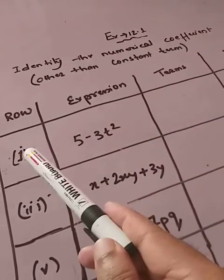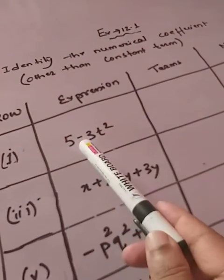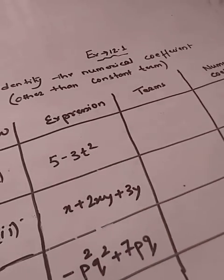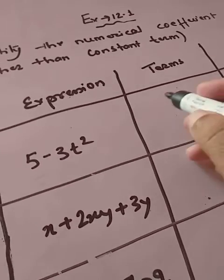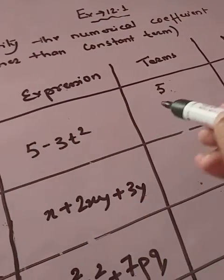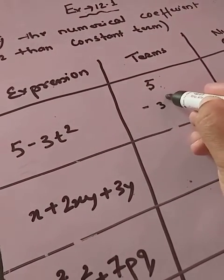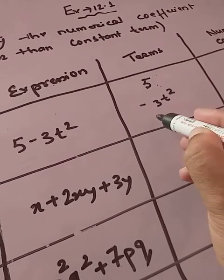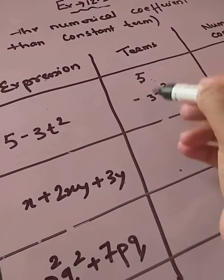Now see the first thing you have to do is under row you have to write the number, which number you are doing. That is question number 1. The expression, question number 1 expression is given 5 minus 3t squared. Now you have to write the terms. How to write? First you will write the first term. This is the first term. And what is the second term? Minus 3t squared. If your third term is there, then you will write below it.